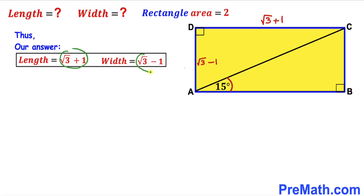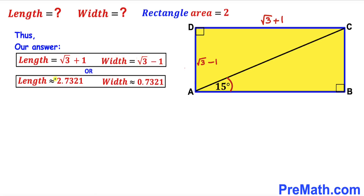So our length is √3+1 ≈ 2.7321 units and our width is √3−1 ≈ 0.7321 units. Thanks for watching and please don't forget to subscribe to my channel for more exciting videos.